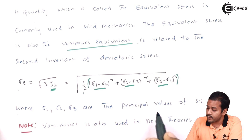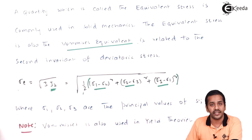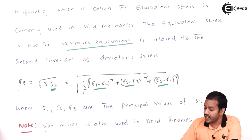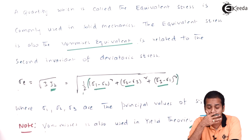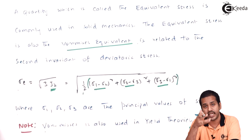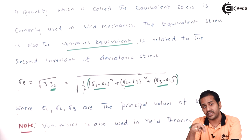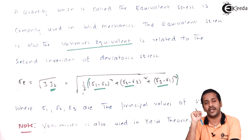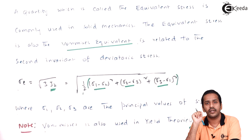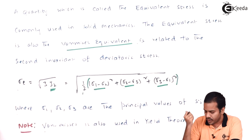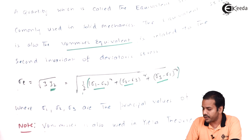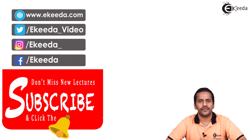Sigma_1, sigma_2, sigma_3 are the principal values of s_ij, and von Mises stress is also used in yield theories. In the distortion energy theory, von Mises stress serves as a criterion: if the stress state at a particular point exceeds the von Mises stress, the component is said to have yielded. It acts as a threshold and is therefore very important.